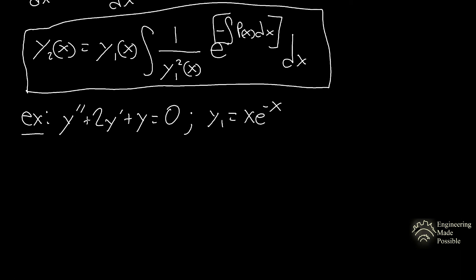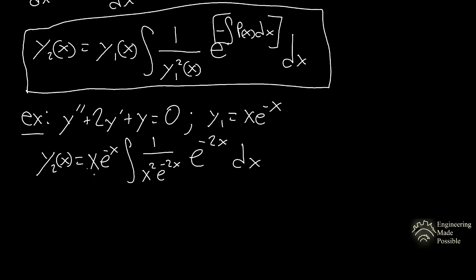We have y'' plus 2y' plus y equals 0, and one of the solutions is y₁ equals x·e^(−x). Let's plug into the formula to get the second solution. Our y₂(x) equals x·e^(−x) times the integral of 1 divided by (x·e^(−x))² times e raised to the negative integral of p(x) dx.